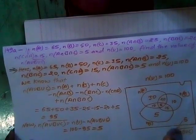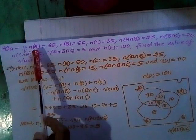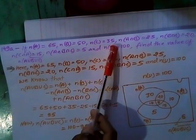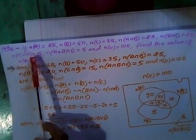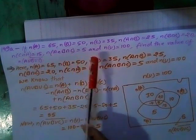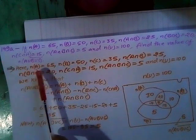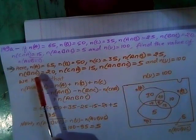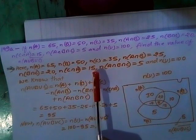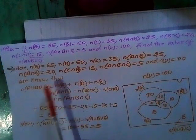Next problem, 149A: N A equals 65, N B equals 50, N C equals 35, N A intersection B equals 25, N B intersection C equals 20, N C intersection A equals 15, N A intersection B intersection C equals 5, and N U equals 100. Find N A union B union C complement.